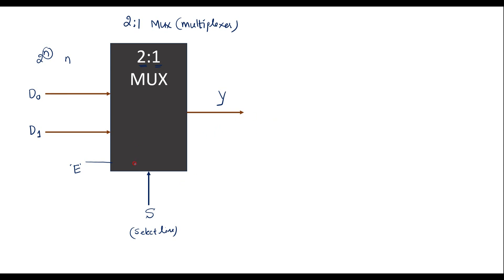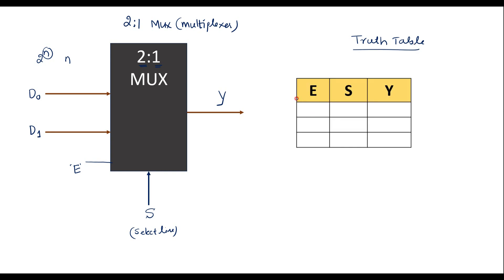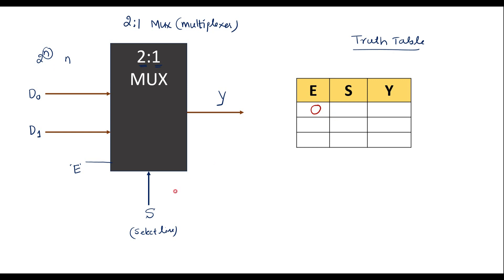Now let us see the truth table of the 2-to-1 MUX. Here E is the enable line, S is the select line, and Y is the output. When enable is 0, irrespective of S — that is, S is don't care (X), it can be 0 or 1 — the output is 0.